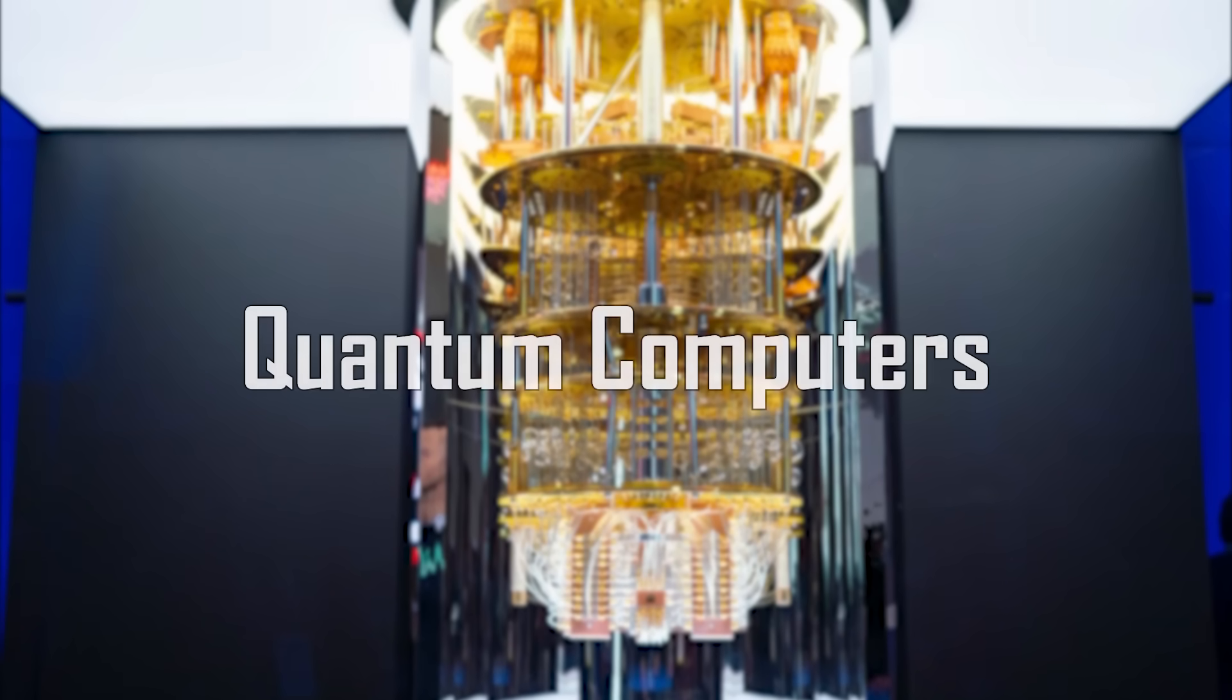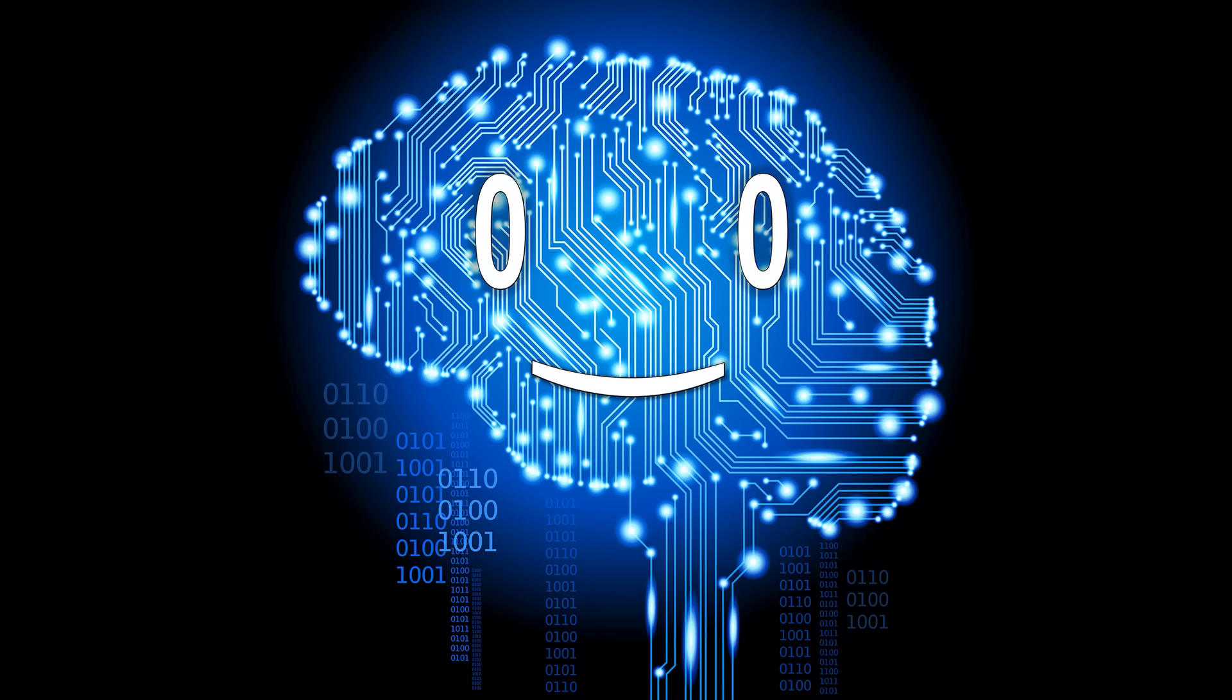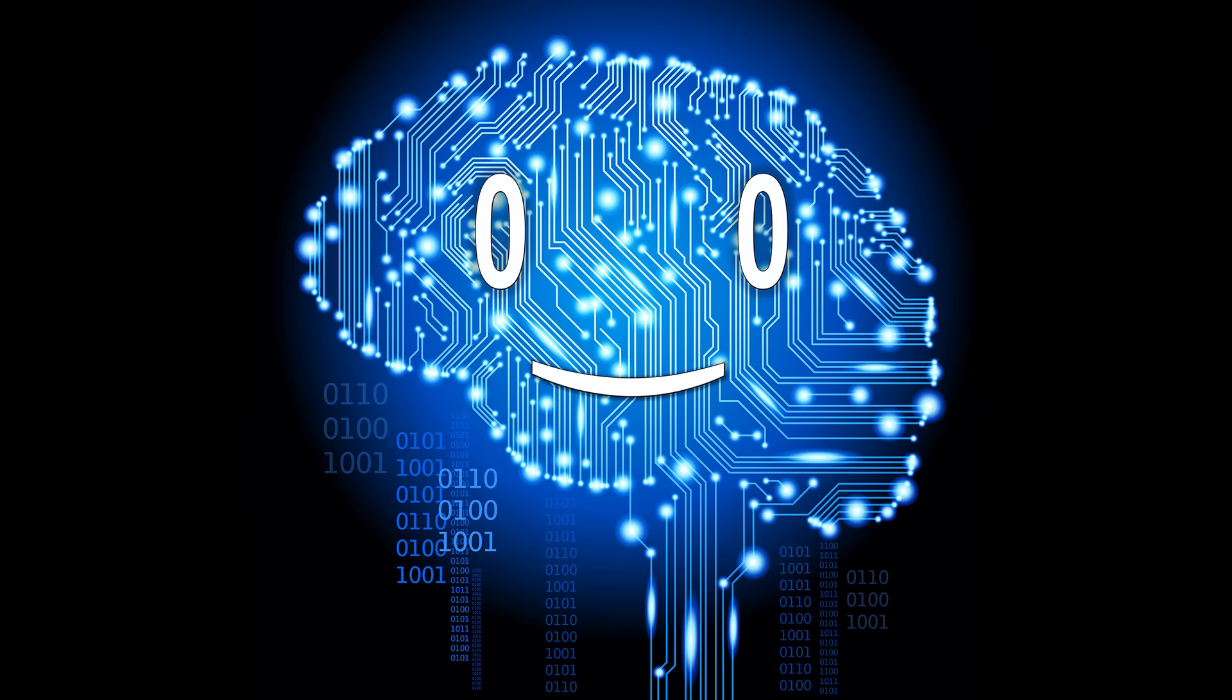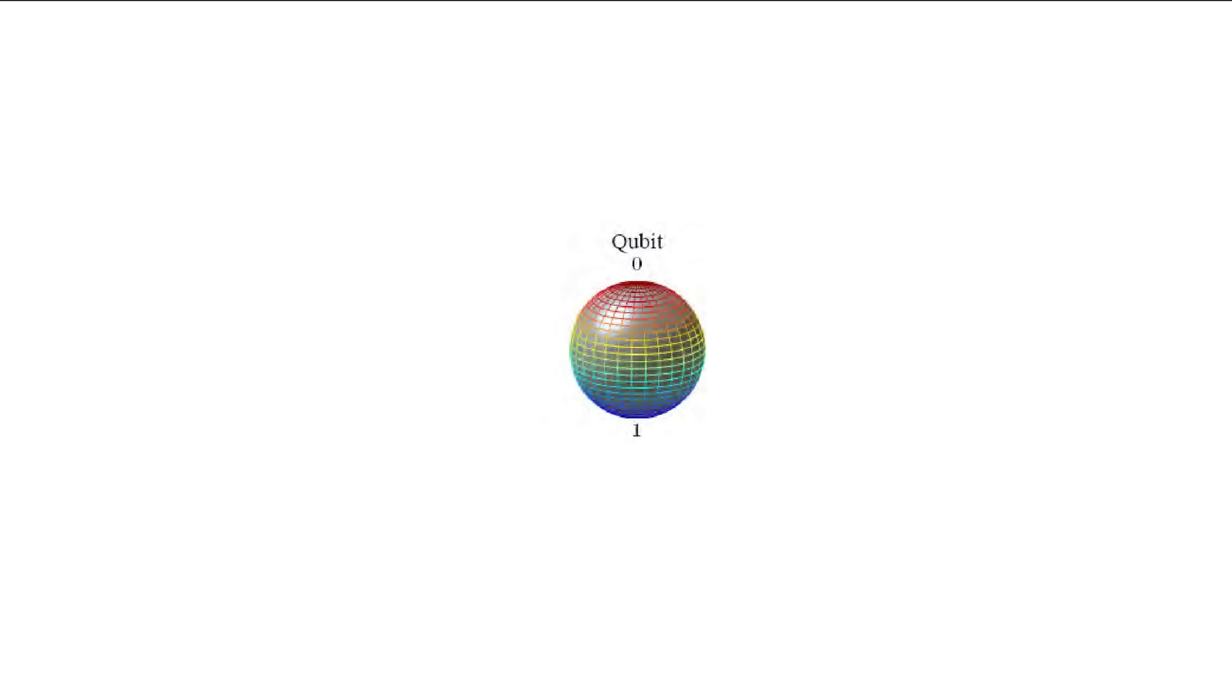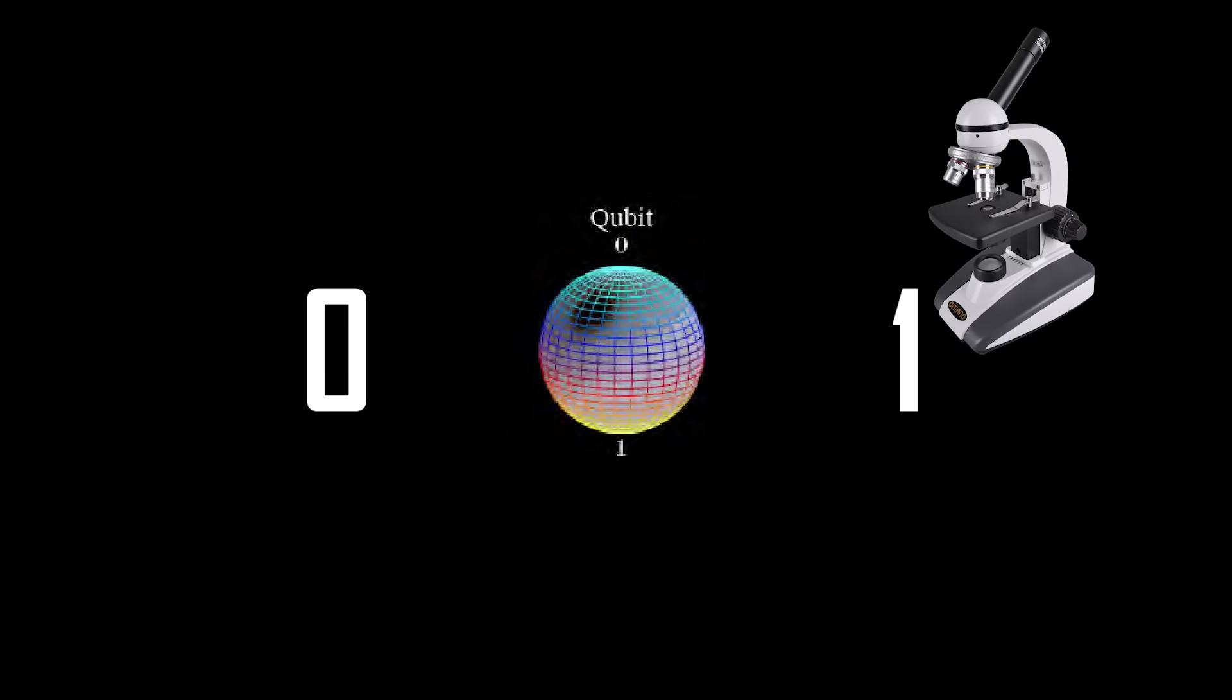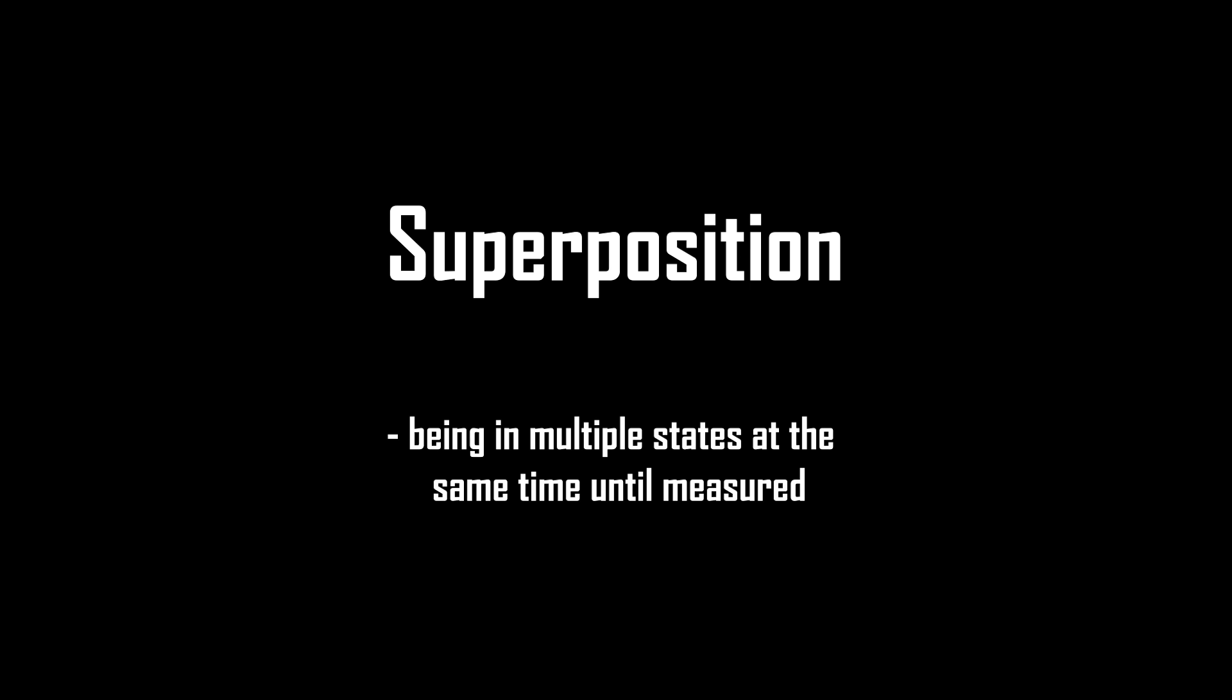Everyone has heard about quantum computers. Those machines that work exponentially faster than conventional computers, solely because they have the word quantum in front. In reality, they use qubits instead of your normal binary bits. So instead of representing only a 0 or a 1, they can be anything in between until measured, something called superposition.